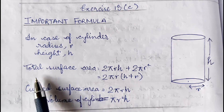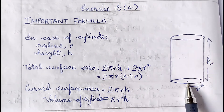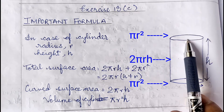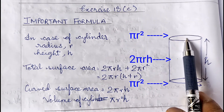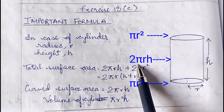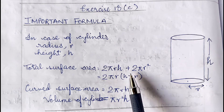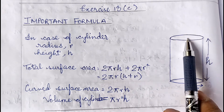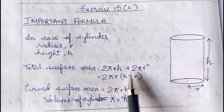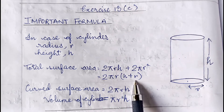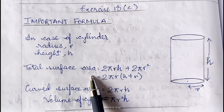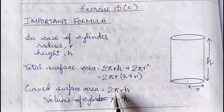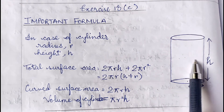For the total surface area of a cylinder, we consider the curved surface and the two circular bases. The curved surface area is 2πrh. Each base has area πr², so both bases give 2πr². Total surface area = 2πrh + 2πr² = 2πr(h + r). If you consider only the curved surface area, the formula is 2πrh.